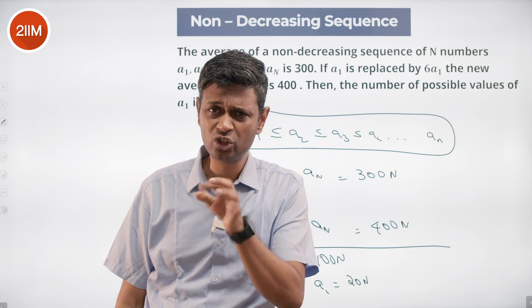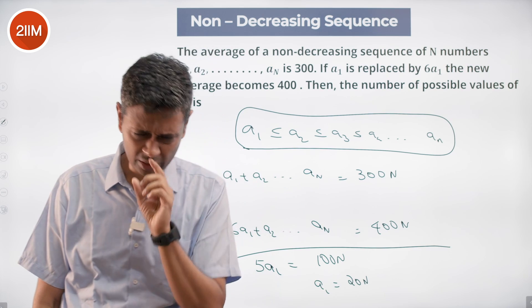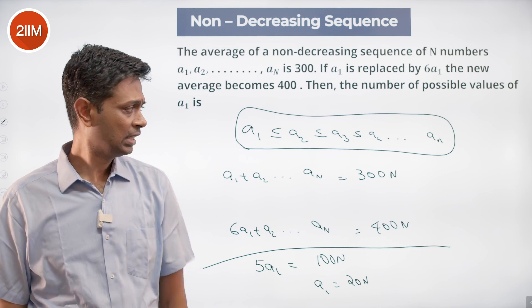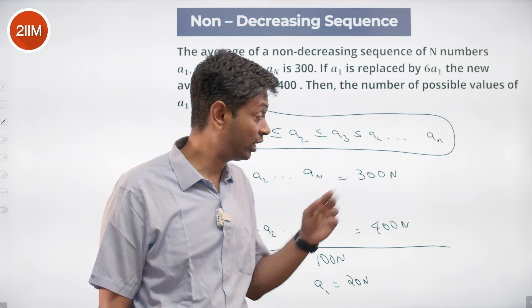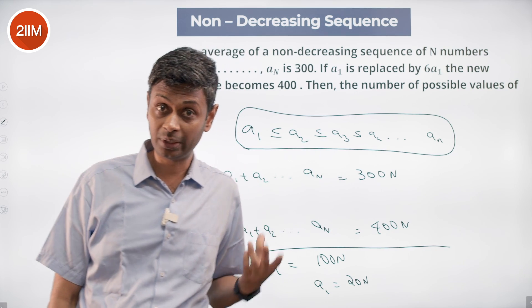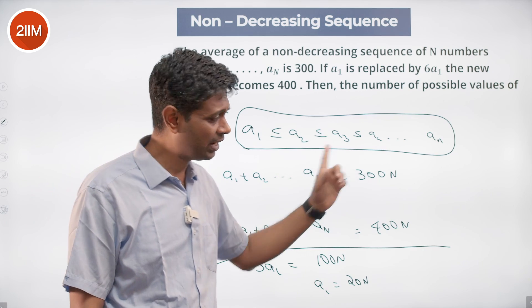Each of these entities is at least 20N. The smallest they can be is 20N, and we know a₁ + a₂ + a₃ + ... + aₙ = 300N. Each of them is at least 20, should be adding up to 300.